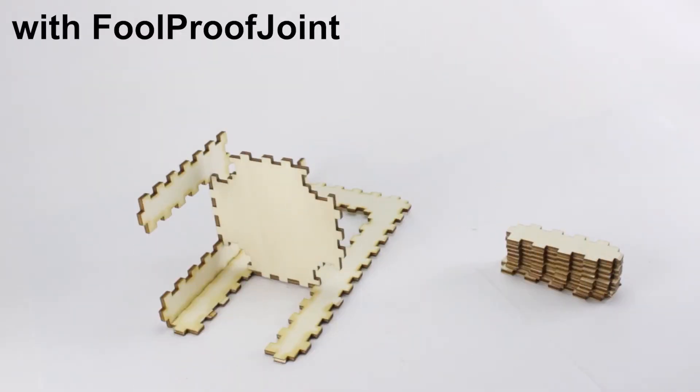FoolProofJoint solves this issue by making pieces identical, thus interchangeable.